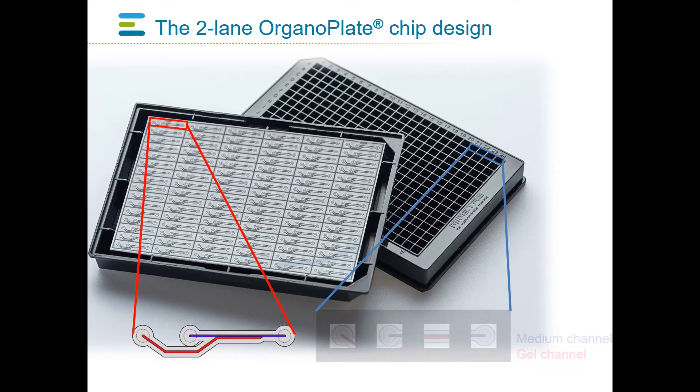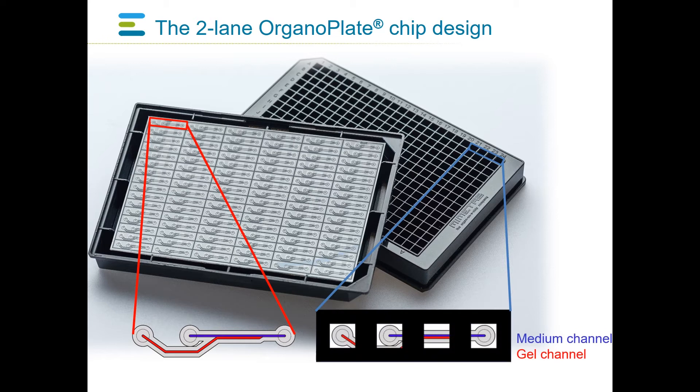96 of these units are present in the Mimetas organoplate. Please note the orientation of the microfluidic network as shown in this image. The microfluidics can both be viewed from the top through the wells of the microtiter plate, or from the bottom by turning over the plate. The illustration shown here will be used throughout the video to clarify the different steps.